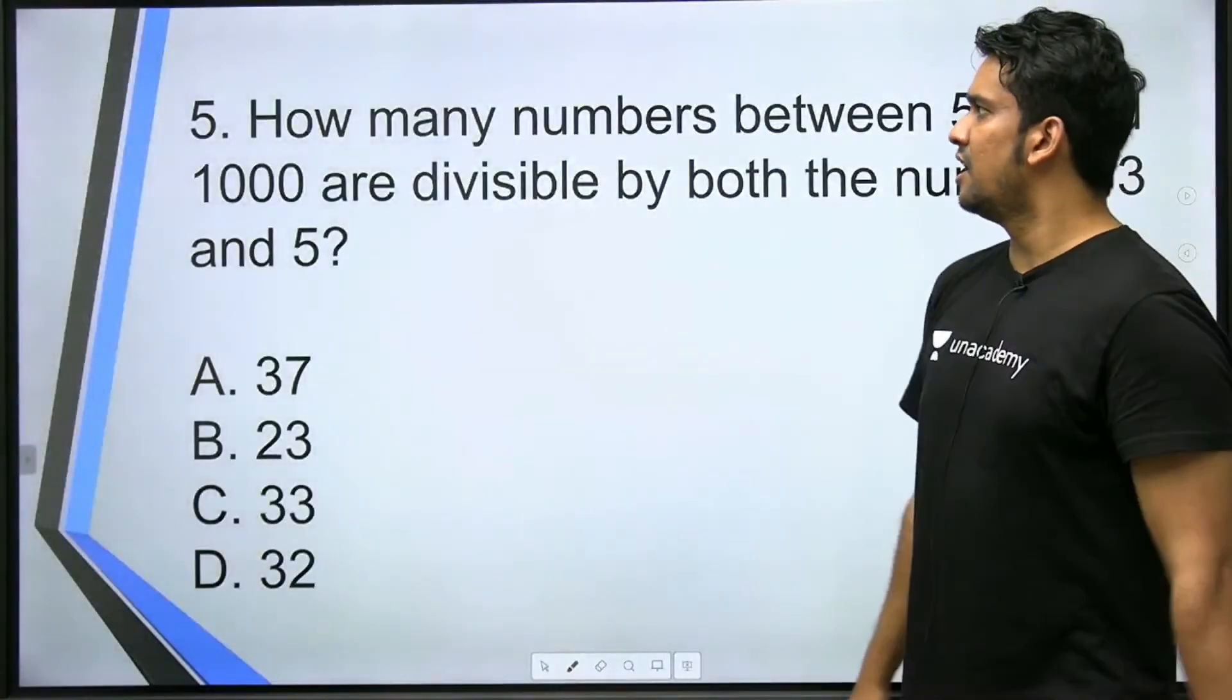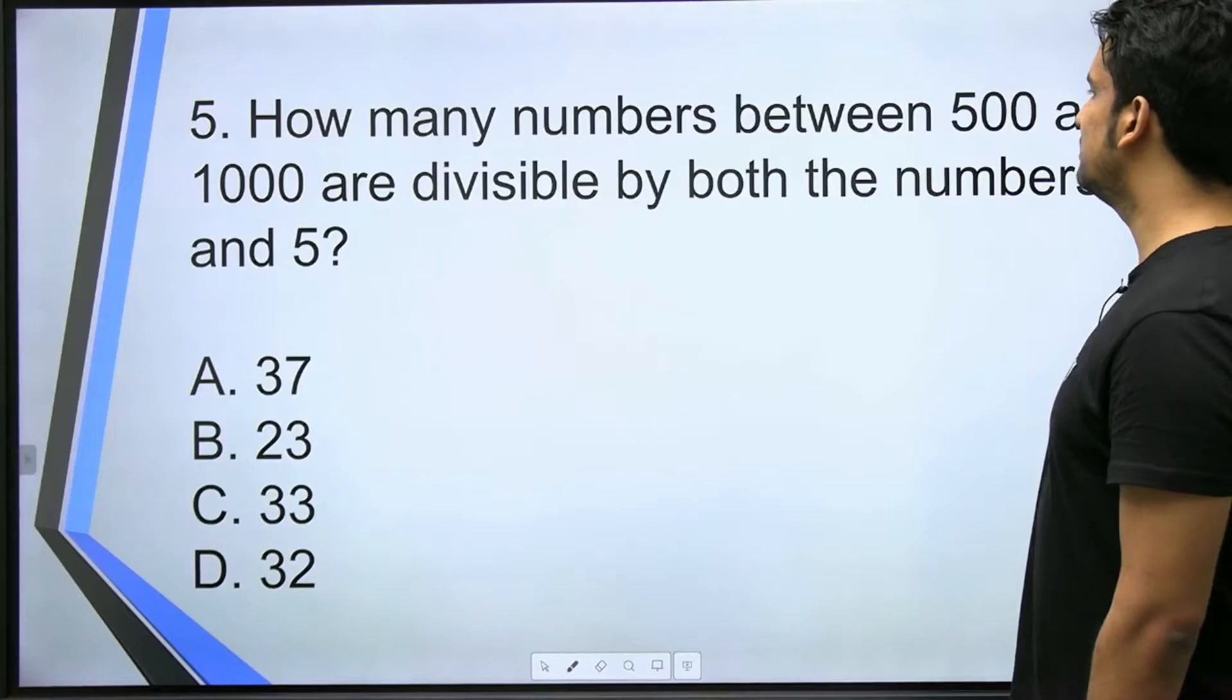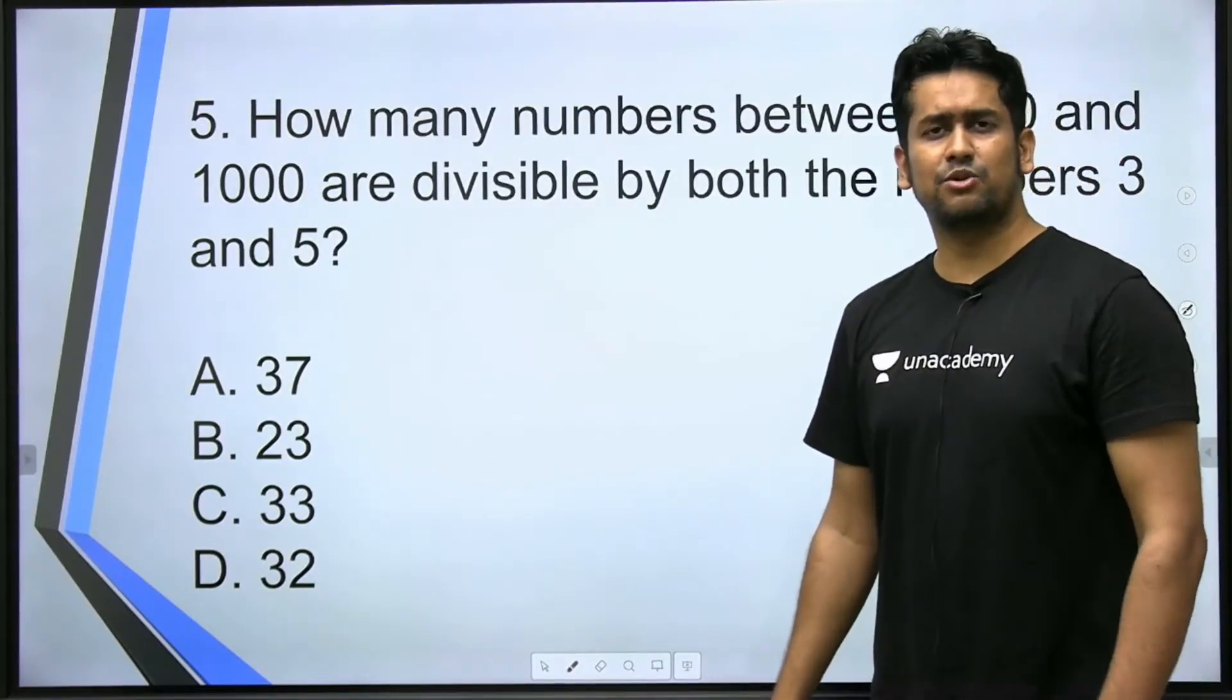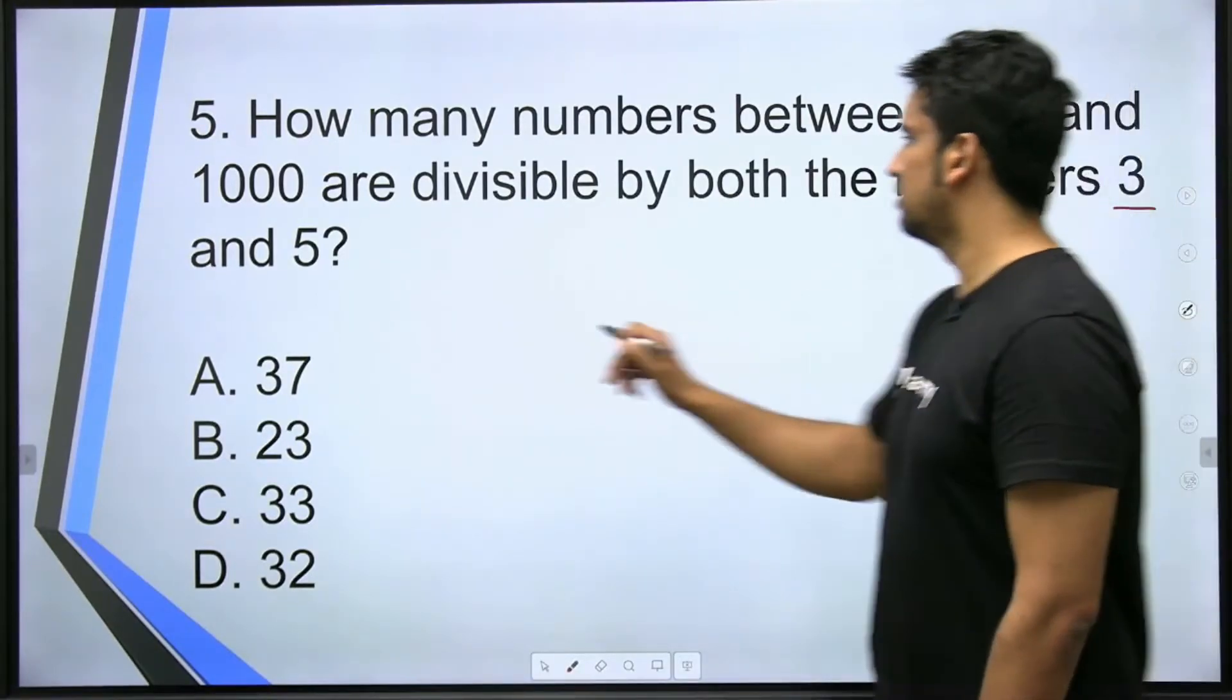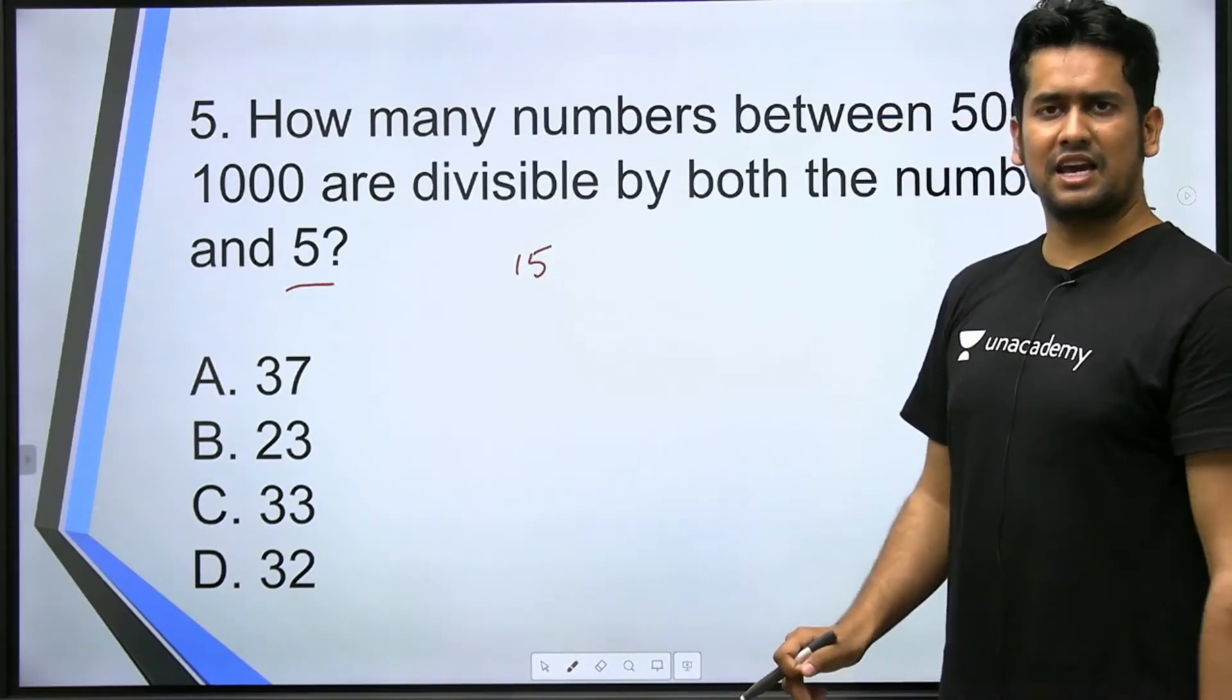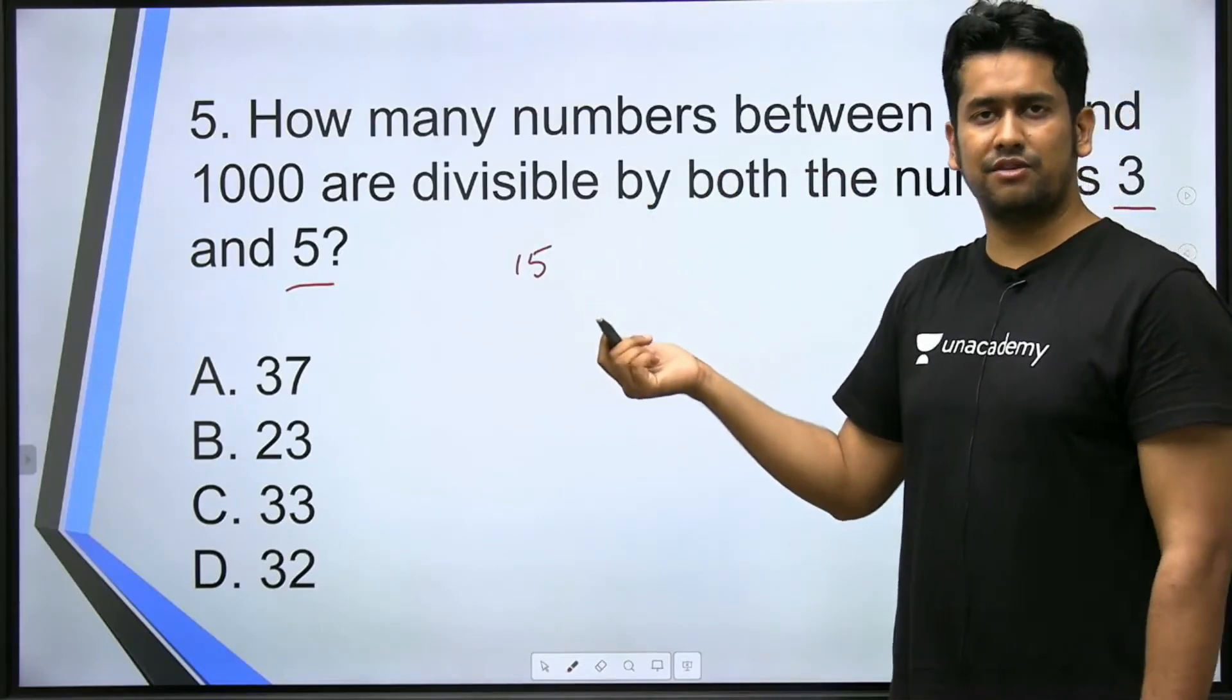Last question. How many numbers between 500 and 1000 are divisible by both the numbers 3 and 5? We've done this type of question in previous classes too. So divisible by 3 and 5 means divisible by 15. So our work is to find just after 500 a number that's divisible by 15.